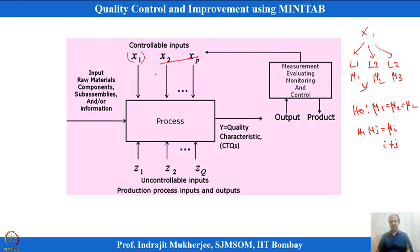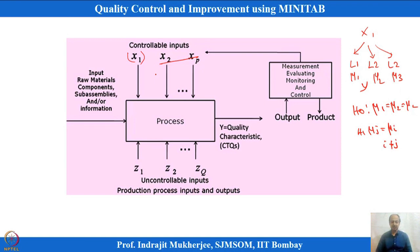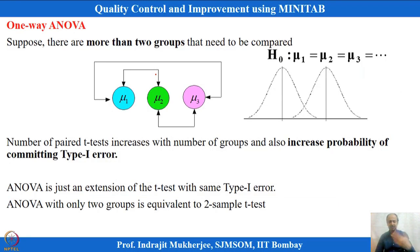We are currently in the improvement phase of DMAIC, where analysis of variance and two-sample t-test are applied. We want to check whether improvements made are effective — whether factors are statistically significant and what level of x will optimize y. For this, analysis of variance is suggested.